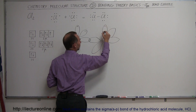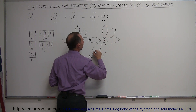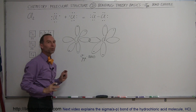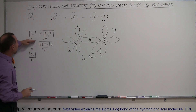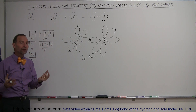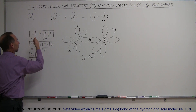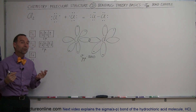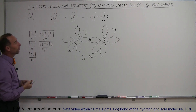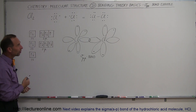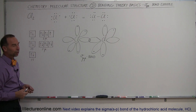Let me draw the other electrons in there so you can see that those orbitals are completely filled — none of those other orbitals are able to form any bonds. Likewise, the 3s orbital is not capable of making any bonds because it is filled with two electrons. So there's a nice example of what the sigma pp bond looks like in the case of the chlorine gas molecule.